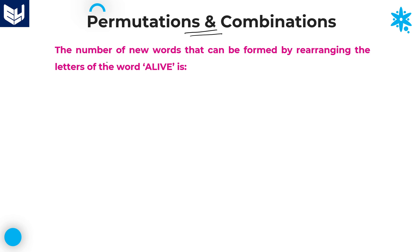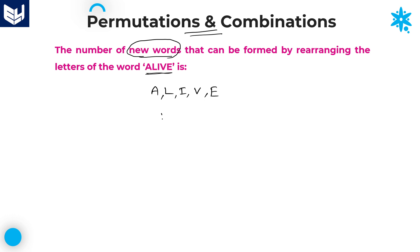The first question given in this session: find the number of new words that can be formed by rearranging the letters of the word ALIVE. The word ALIVE has a total of five letters. By using all five letters we can arrange them in five places, and that can happen in five factorial ways.